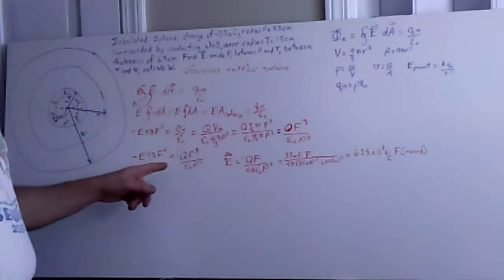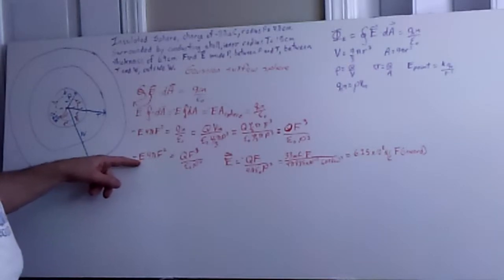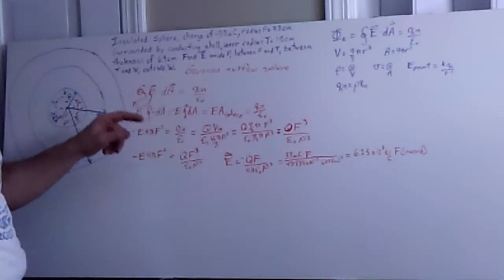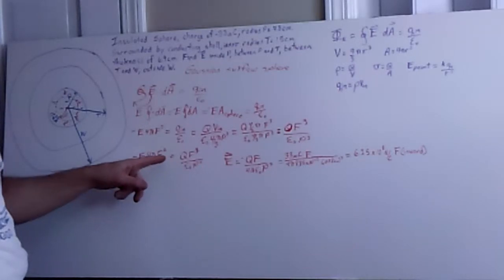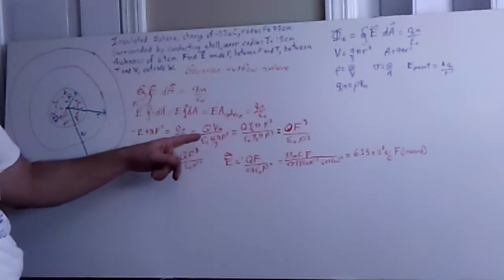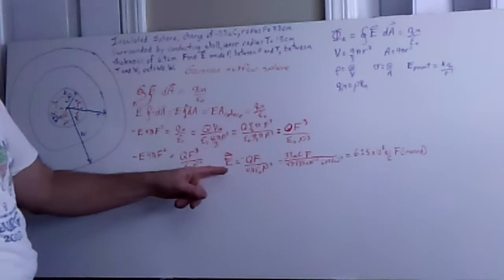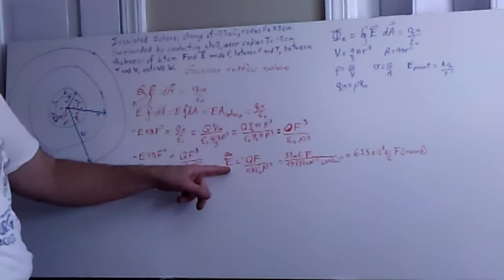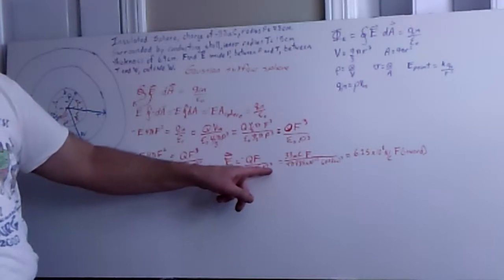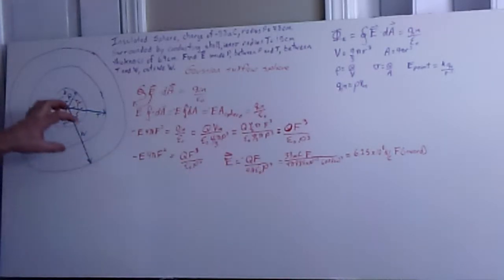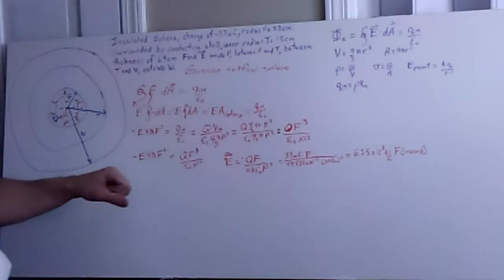And so after all that's done, we can rewrite everything then as negative E 4 pi f squared is going to be equal to q f cubed divided by epsilon naught p cubed, and so f squared and f cubed are going to cancel some factors out. So the net result is our electric field is negative q f divided by 4 pi epsilon naught p cubed. So p again is the radius of our insulating sphere, f is where we are away from the very center of that, and that's the location we're trying to find the electric field at.